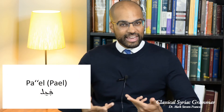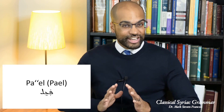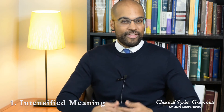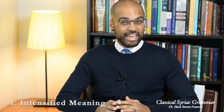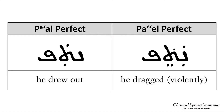The second verbal pattern is the Pa'al. Just like we saw in the last video, verbs in the Pa'al are in the active voice, but the actual function is more complicated than previously discussed. First, verbs in the Pa'al can sometimes function as an intensified version of the meaning that same verbal root has in the Pe'al. For example, the verb 'nefaf' means 'he drew out' in the Pe'al perfect, while 'natef' means 'he dragged violently' in the Pa'al — an intensified version.